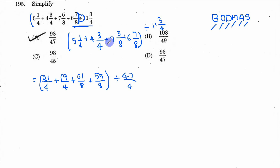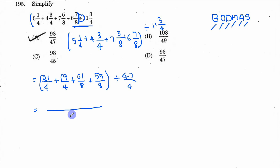What do we remove first? We remove the bracket. So we can solve the bracket. If you look at the denominators — 4 and 8 — the LCM is 8. Here the denominator is 4, so we multiply by 2.